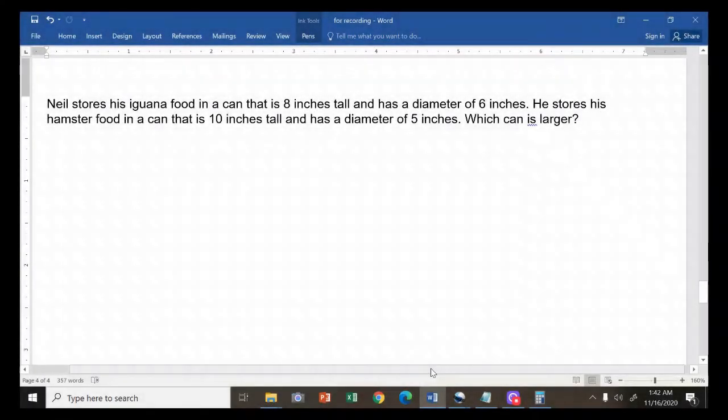Let's try this example. Neer stores his iguana food in a can that is 8 inches tall and has a diameter of 6 inches. He stores his hamster food in a can that is 10 inches tall and has a diameter of 5 inches. Which can is larger? In this problem, we are comparing two cans. The cans are in the shape of a cylinder.